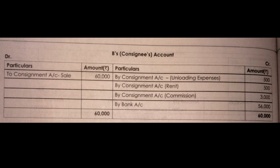This is the basic idea — it is very easy. If you have expenses, you will get the credit side of your commission; you will get expenses. If you have expenses, that is your income. Credit via consign — that is the income. If you have expenses, you will use this. In B's consignee account: sales are 60,000, unloading expenses 500, and rent 500.